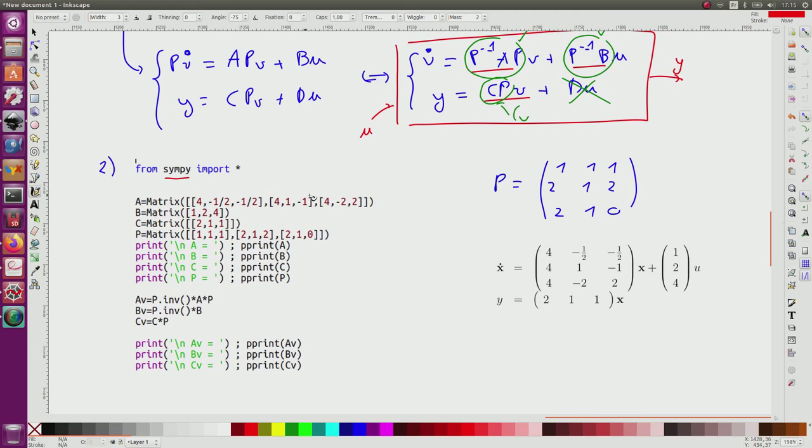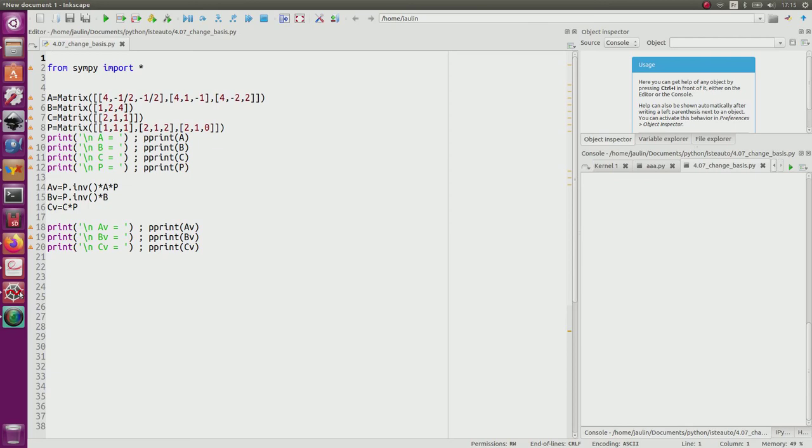So I can define matrices like this: A, B, C and P. I will print them just to check everything is okay. I will compute my matrices Av, Bv, Cv and I will print them. This is a program. I run it.